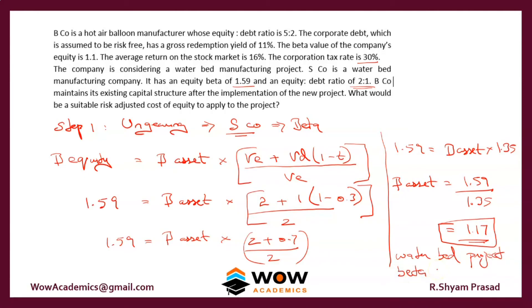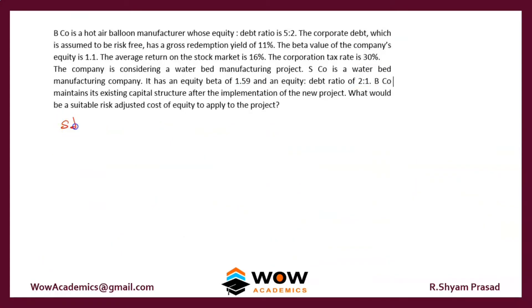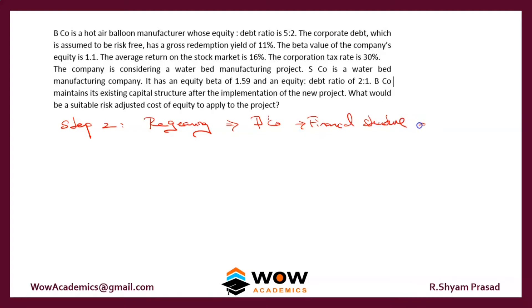This asset beta does not yet include the financial risk of Bico, so we have to do that again in the next step. Step 2 is called regearing. In regearing, we take Bico's financial structure and add it to get an equity beta.